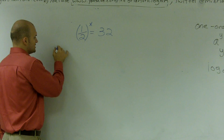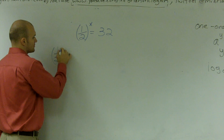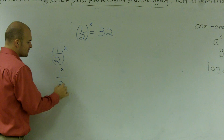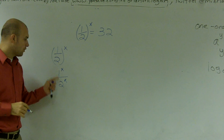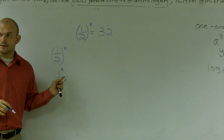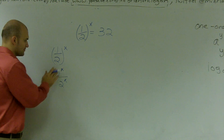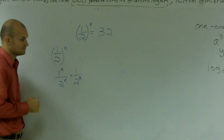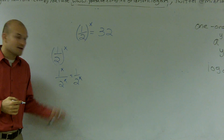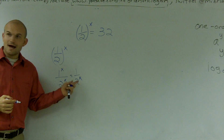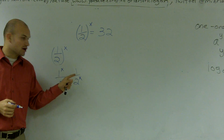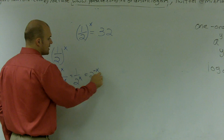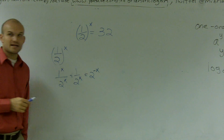One thing you need to know is that 1 over 2 raised to the x is the same thing as 1 to the x over 2 to the x. Well, 1 raised to any number is going to be 1, right? So really, this equals 1 over 2 to the x. And I don't want to ever have my number as a fraction, so I could write this as a whole number.